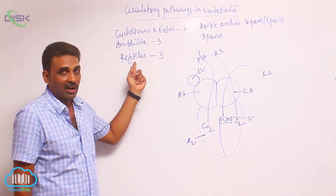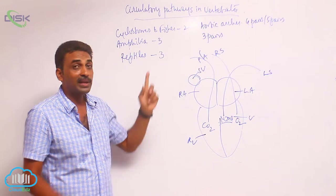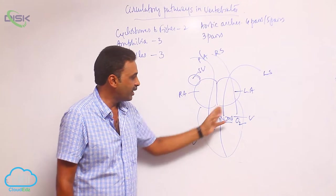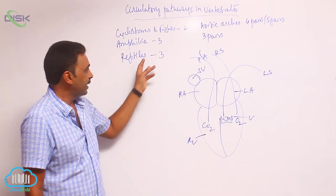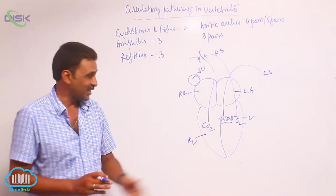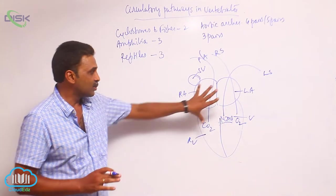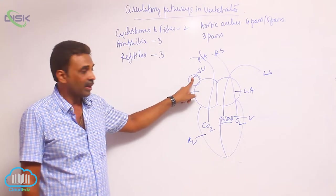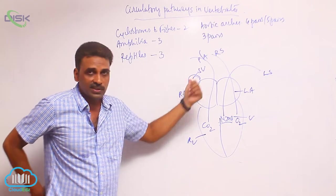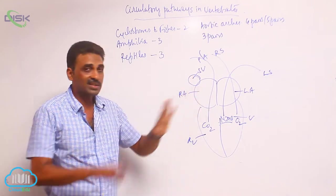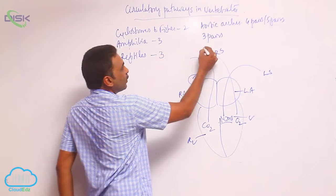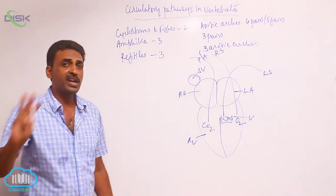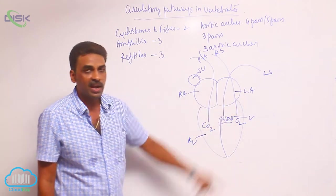So, the reptilian heart has an incompletely divided ventricle — it is still a three-chambered heart with two atria and one ventricle which is incompletely divided. In reptiles there is still incomplete double circulation because there is mixing of blood. Sinus venosus is present on the dorsal side and is the pacemaker, but the truncus arteriosus is absent on the ventral side. Only three aortic arches are present: one pulmonary and two systemic.